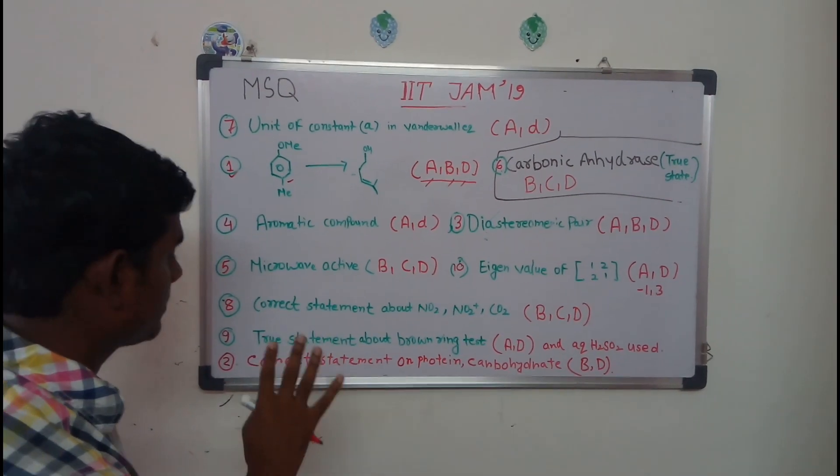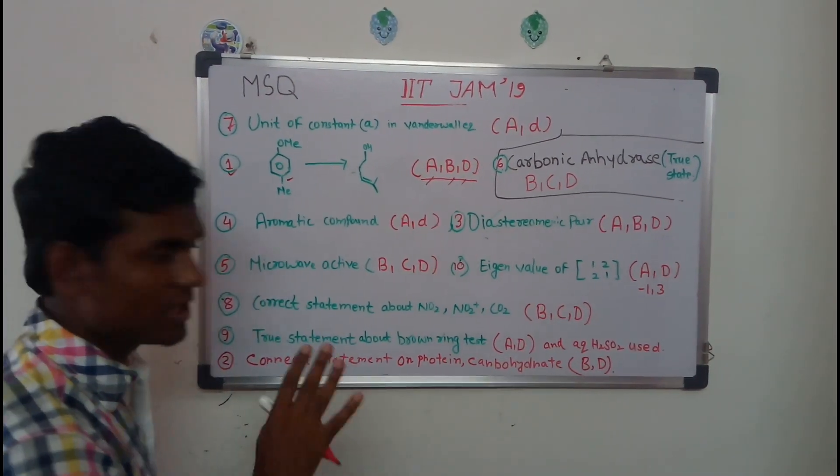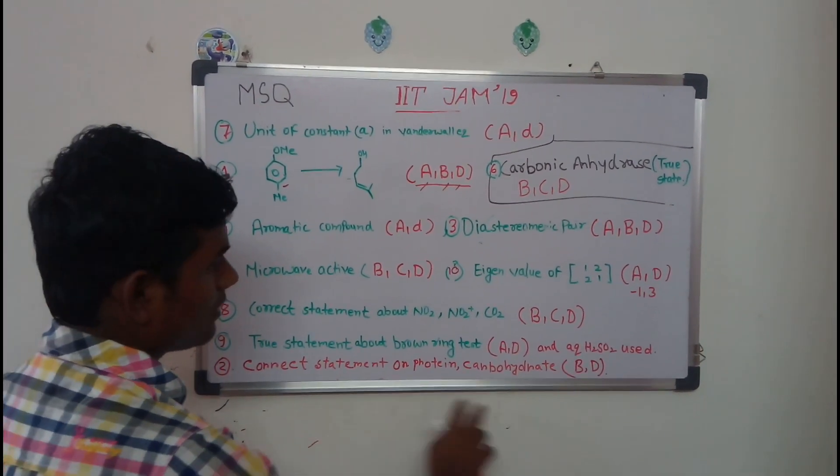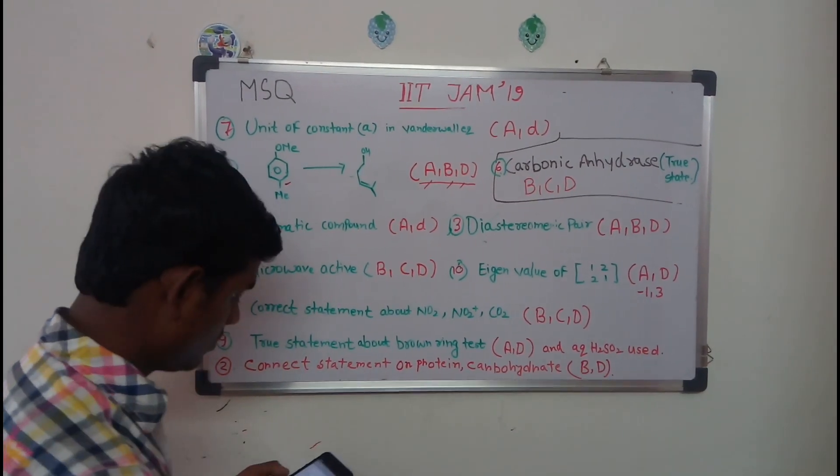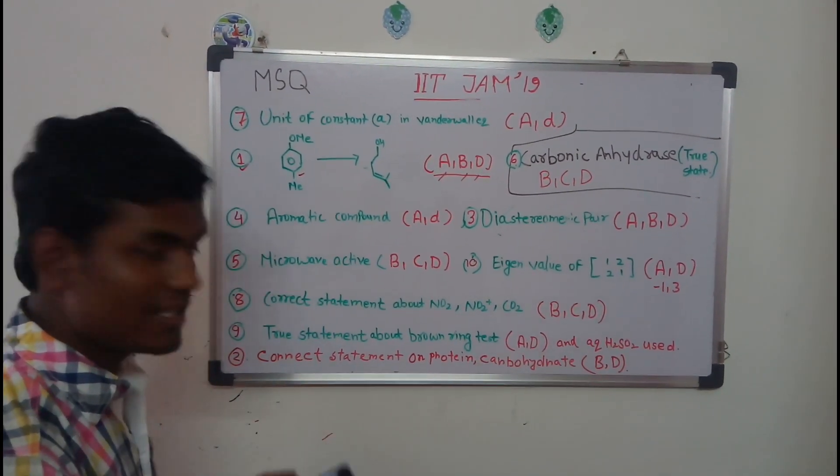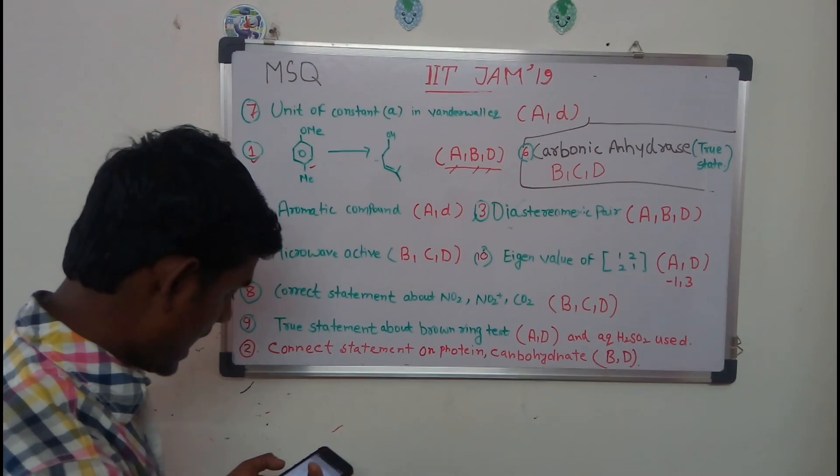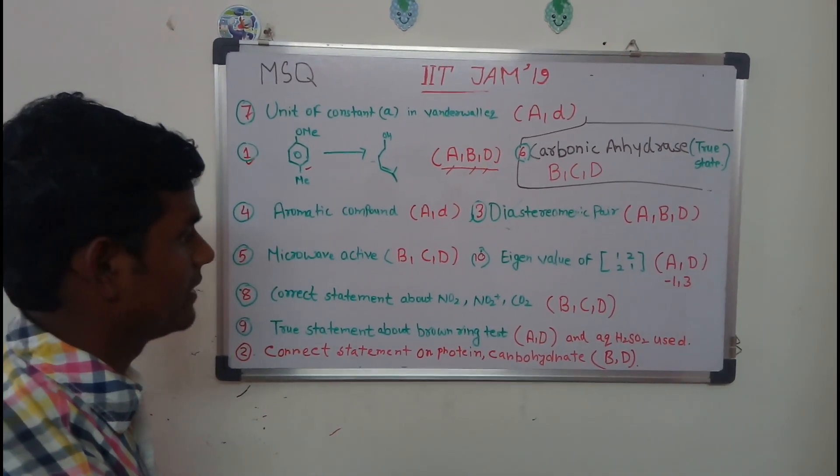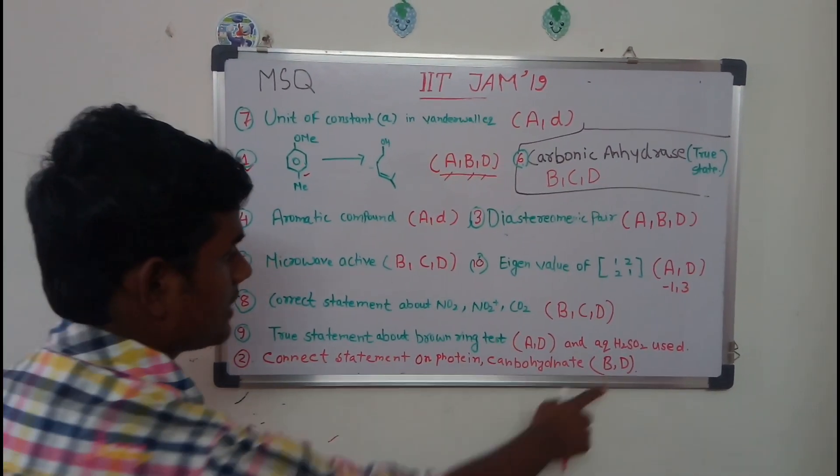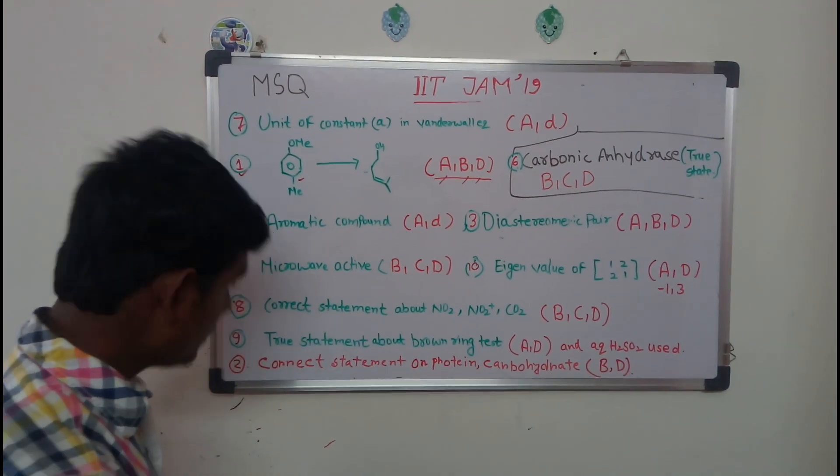So the correct option here is B and D. Those are: uracil is a pyrimidine - that one is correct - and the reaction of glucose with calcium hydroxide. These are the correct options, B and D. Let's take the third question. The third question is the diastomeric pair among the four options.